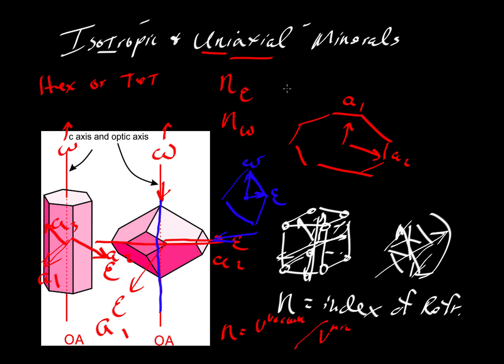And so this omega would not be equal to, so n omega is not equal to n epsilon. It can be either a faster or a slower direction. We'll look at that later. But this difference, n omega minus n epsilon, is something we refer to as delta. And delta has a special name. We call it birefringence.